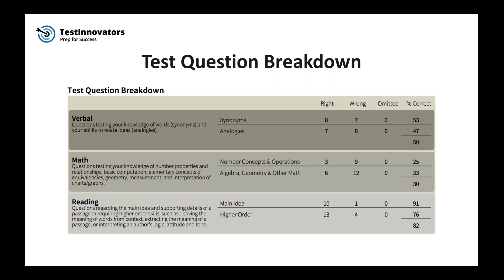For reading, it's broken down into main idea and then higher order — which includes things like deriving meaning of words from context or vocabulary, figuring out the meaning of a passage's supporting ideas or inference, or interpreting an author's logic, attitude, and tone. Another important thing about the test question breakdown is making sure to compare your wrong answers with your omitted questions. This can tell you if you are perhaps skipping too many questions or if you are guessing too much and maybe should skip a few more if you're not sure of the answer.